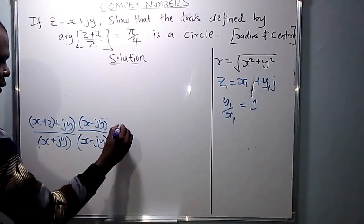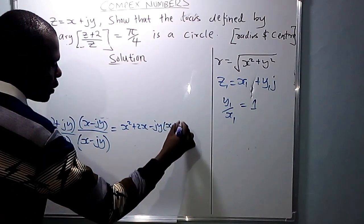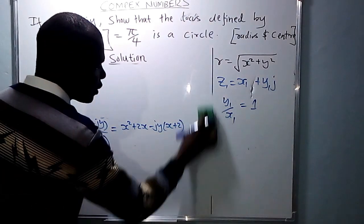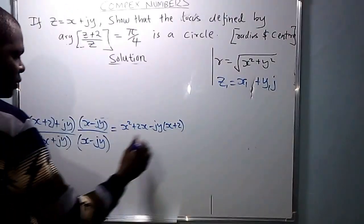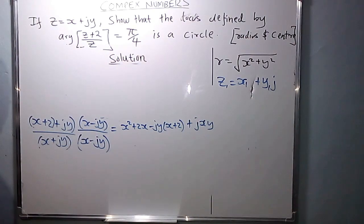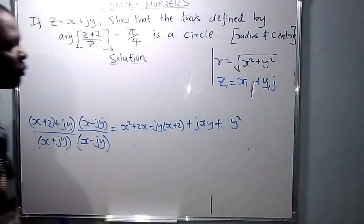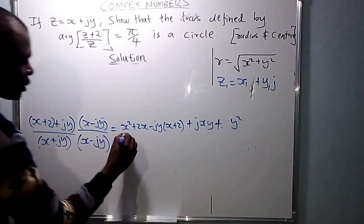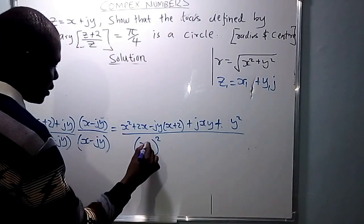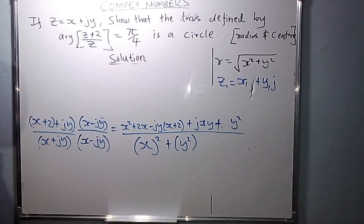In the numerator, (X+2) multiplies everything: (X+2)·X gives X squared plus 2X, and (X+2)·(−JY) gives −JY(X+2). Then JY multiplies X giving JXY, and JY times (−JY) gives −J²Y² which equals positive Y squared since J squared is negative 1.